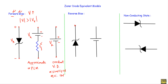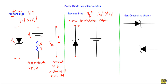Now, if I have a Zener diode and a voltage source V, and I connect the negative terminal of the voltage source with the P side and the positive terminal with the N side, and keep increasing the reverse voltage Vr — when the magnitude of reverse voltage Vr is greater than the Zener voltage Vz, the Zener diode will operate in the Zener breakdown region. In that case, the Zener diode will conduct current and will act as a voltage regulator.